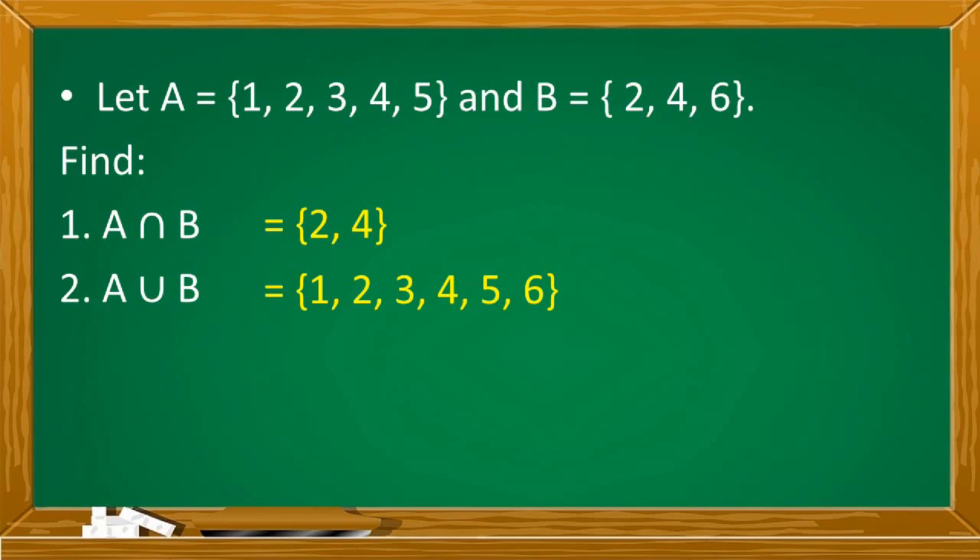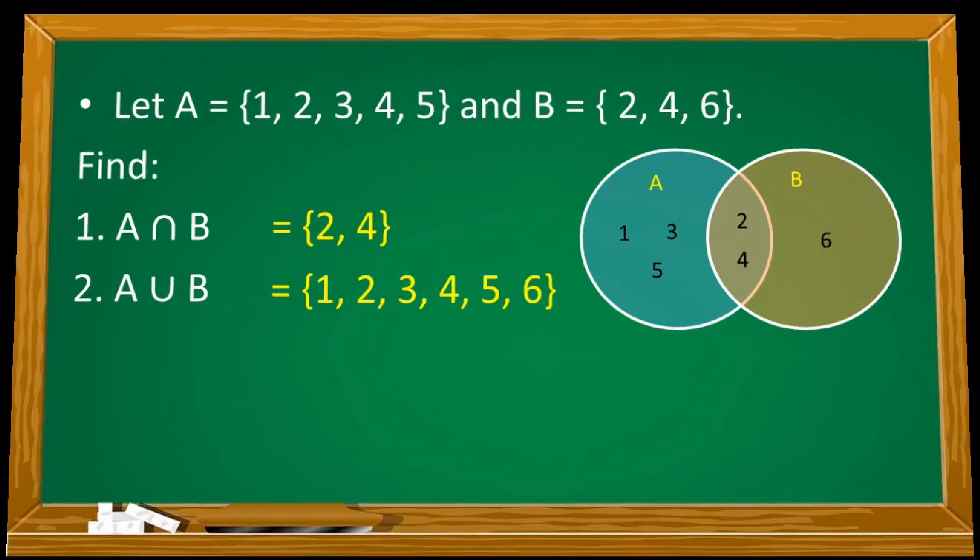Using Venn diagrams, you can easily determine the union and intersection. Sa intersection, yung middle or gitnang elements, 2 and 4. Sa union, pagsasamahin lang lahat. So we have 1, 2, 3, 4, 5, and 6. Let's have another set of examples.